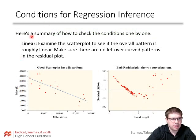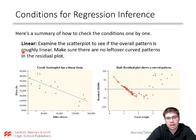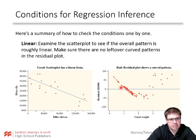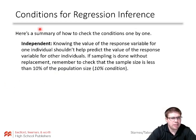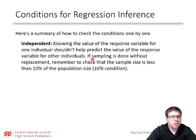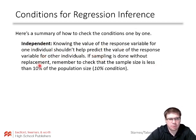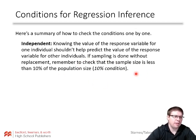Here's the summary of how to check the conditions one by one. For linear: examine the scatter plot to see if the overall pattern is roughly linear, and make sure there are no leftover curve patterns in the residual plot. A bad residual plot shows a curve pattern; a good scatter plot looks linear. For independent: knowing the value of the response variable for one individual shouldn't help predict the value for another. If sampling without replacement, check that sample size is less than 10% of population size.